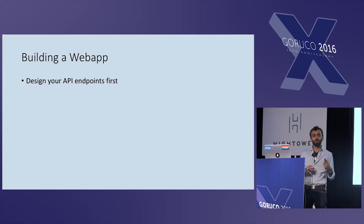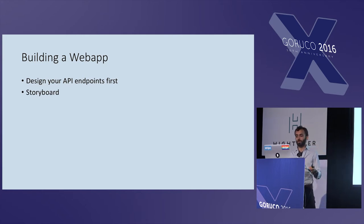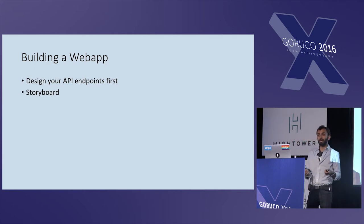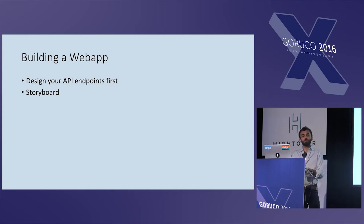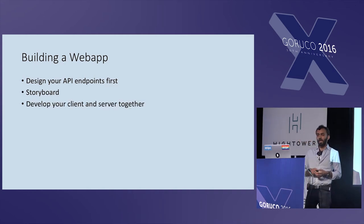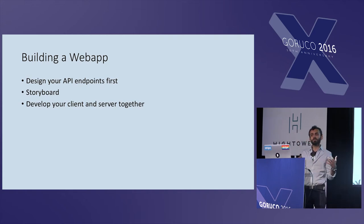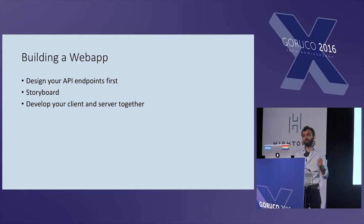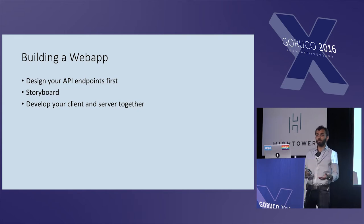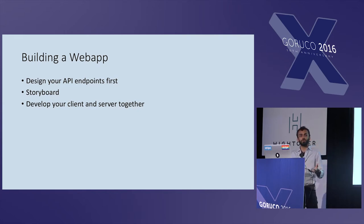If you've ever taken classes on UX, UI, or product design, you'll learn about user stories and storyboarding. Designing your API first is essentially a lightweight way of doing that. The interface defines the way that your users are actually going to be talking to your product. And finally, you always want to develop your API server and client together. Even if you think someone else is going to be providing the client, you always want to write at least one client for every API you're building — otherwise you won't know what your users are going through.